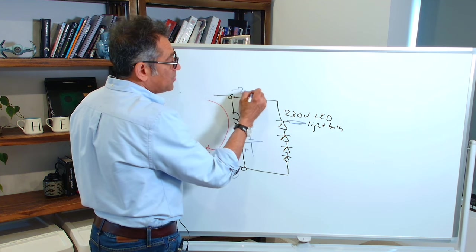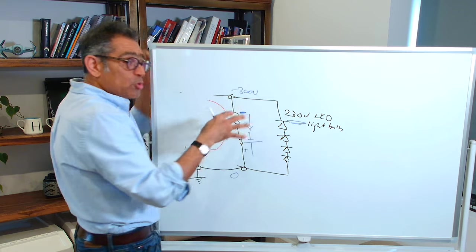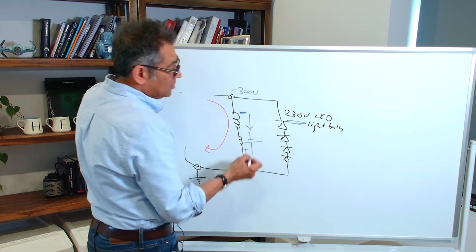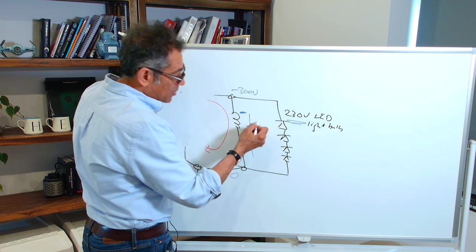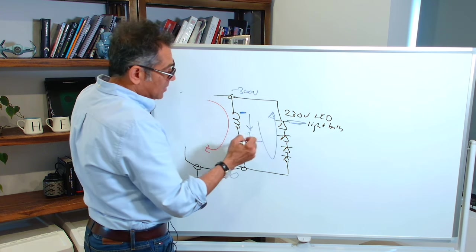When it approaches around 170 to 200 volts these diodes will start to conduct and the current will flow through these diodes.